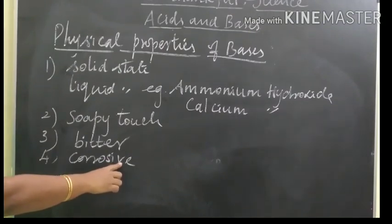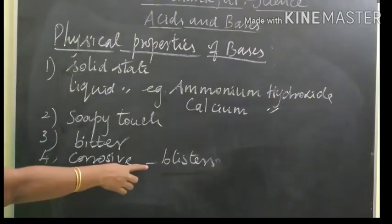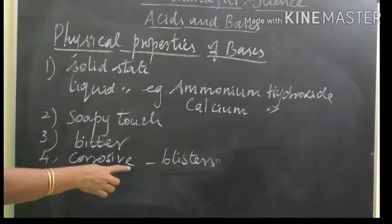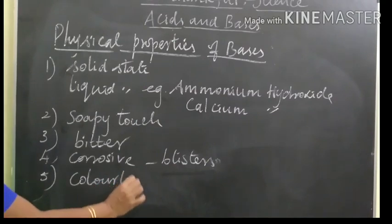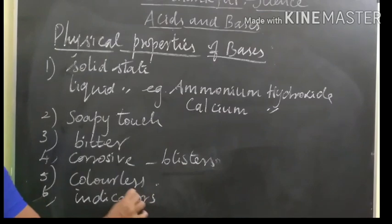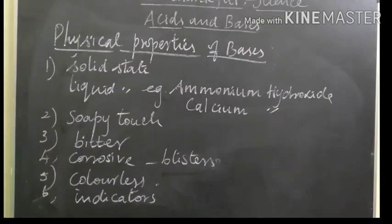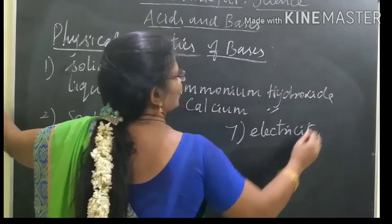When bases come in contact with the skin frequently, they form painful blisters — a rising of the outer skin. Fifth point: bases are generally colourless. Sixth point: bases change the colour of the indicators. Bases also conduct electricity in aqueous solution.